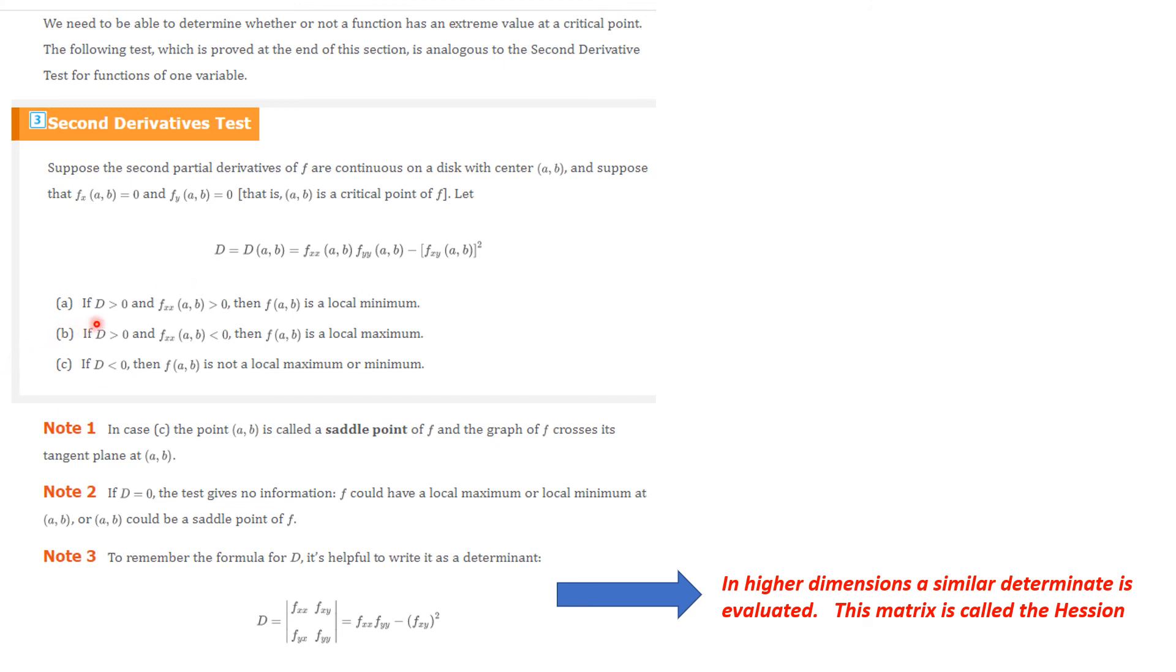Now, if D is bigger than 0 evaluated at that critical point AB and if FXX at AB is bigger than 0, then this is a local minimum. If D is bigger than 0 and FXX at AB is less than 0, then that's a local maximum. So, notice you get a local minimum or local maximum whenever D is bigger than 0. If D is less than 0, then it's not a local maximum or minimum and that means that we're going to have a saddle point. And if D equals 0, actually, the test fails. If D equals 0, the test fails because we don't have this. This would have been a saddle point.